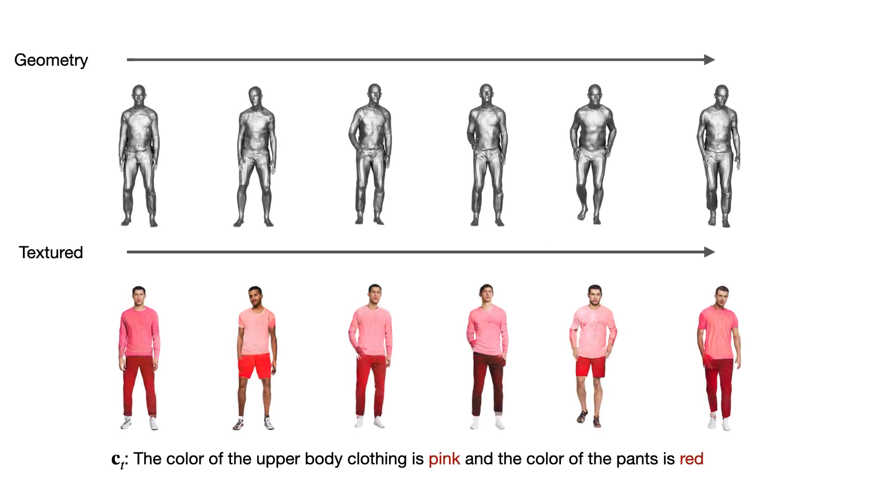Here we show the effect of varying CT keeping other factors fixed. In the first row we show the geometry. In the second row we show the corresponding texture rendered mesh. CT is fixed for each mesh of this row. One can observe that we can generate a diverse set of coarse colorful fashion images.